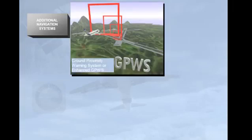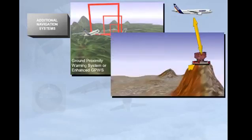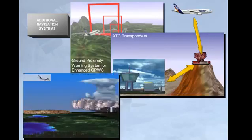The additional navigation systems include Ground Proximity Warning System (GPWS), or Enhanced Ground Proximity Warning System (EGPWS), ATC transponders, and weather radar.